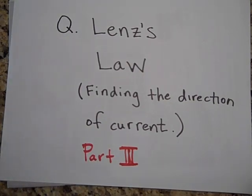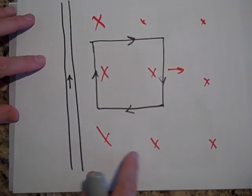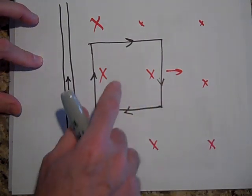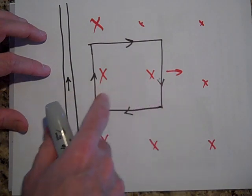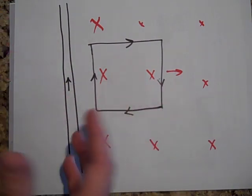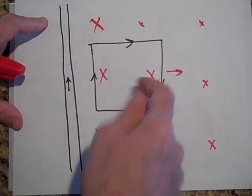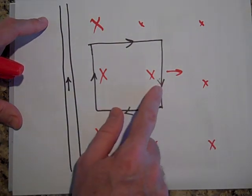Okay, last thing on Lenz's Law here. This is part three. I just wanted to show you a couple other things. So back to this problem, if you take this loop and you move it that way, then you are decreasing the amount of X's that are in this loop. And so it's going to try and make its own X's to try and keep the status quo. And so to make its own X's, the current will flow this way.